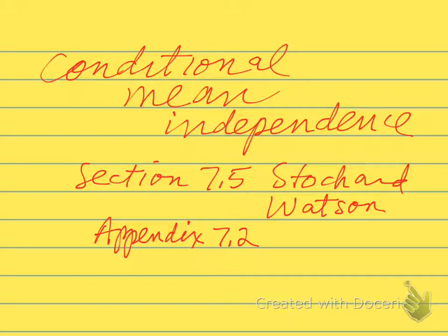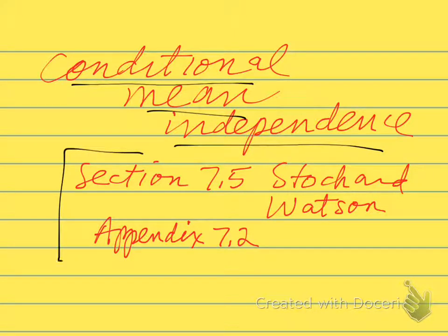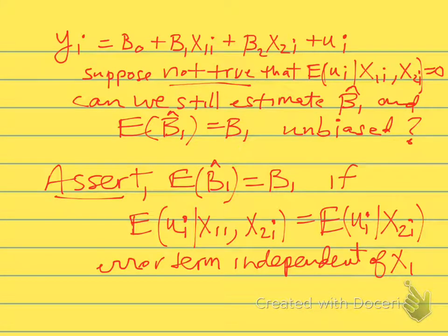I'd like to cover the concept of conditional mean independence, discussed in Chapter 7 in Stock and Watson. The idea here is that our assumption about regressions that enables us to say that the estimated coefficient is valid, credible, or not biased, can be somewhat weaker than we've had in the past.